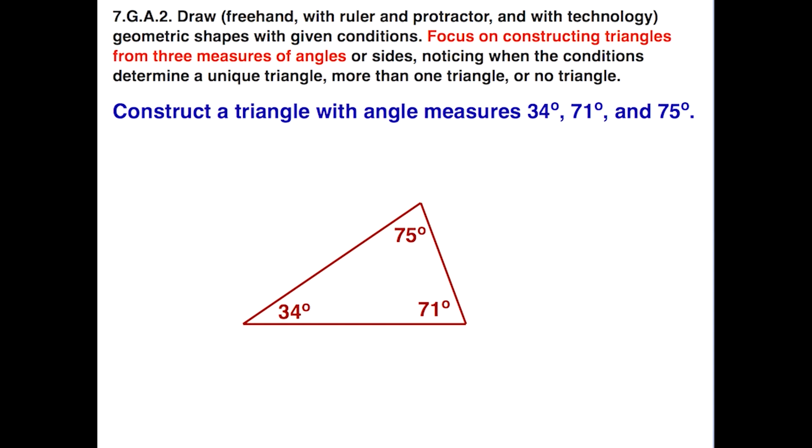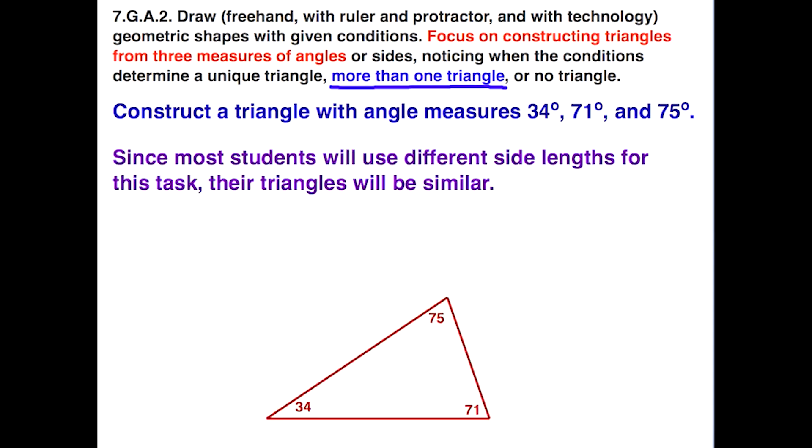Let's knock off the extra part of the segments, and there we have it. We've constructed our triangle with measures 34, 71, and 75 degrees. Since we didn't have any directions as far as how long or short to make the sides of this triangle, then students are going to come up with different sized triangles. They'll all have the correct measurements—34, 71, and 75 degrees—but they will be different sizes.